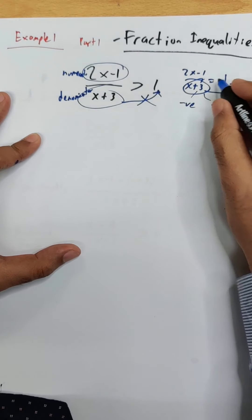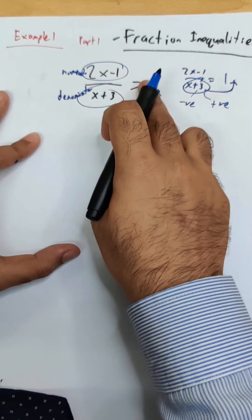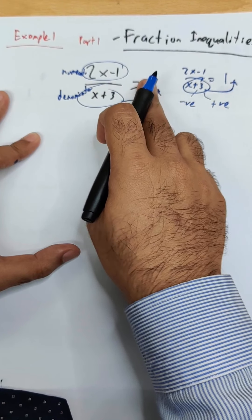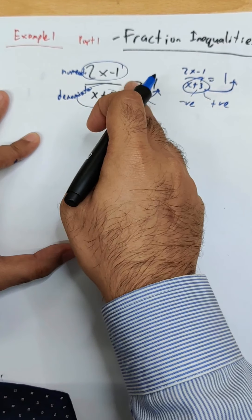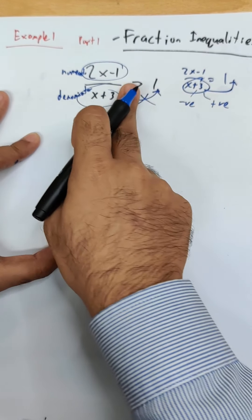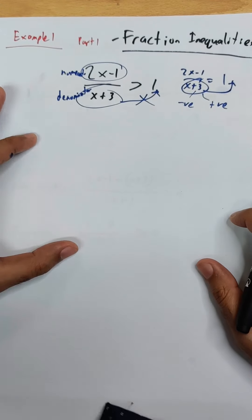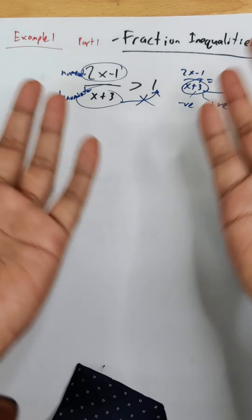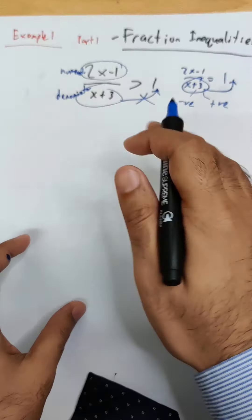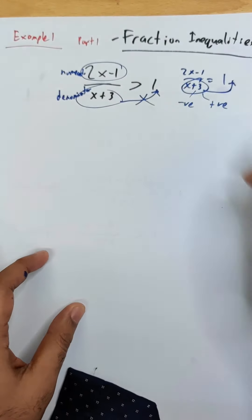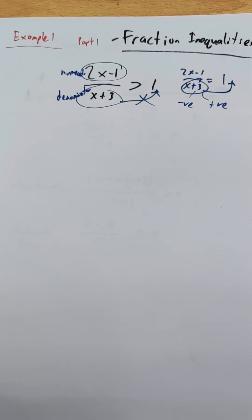For an equality it doesn't matter if you cross multiply, but for inequalities if you cross multiply and x+3 is negative, then you're going to change the sign to the opposite side. But we do not know yet whether it's positive or negative, so you cannot cross multiply it.